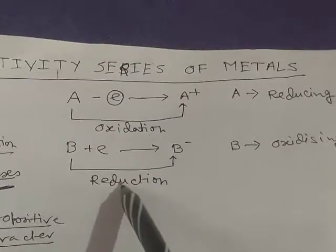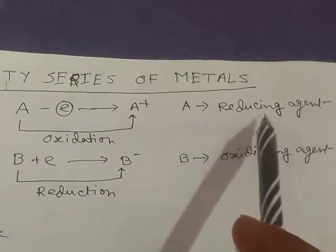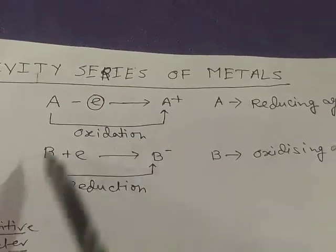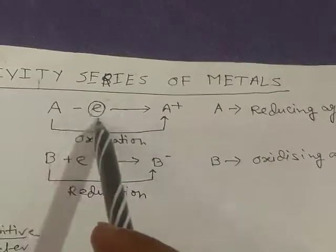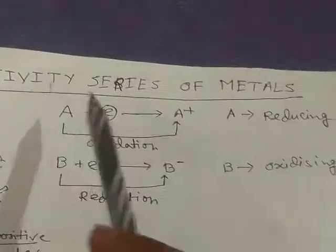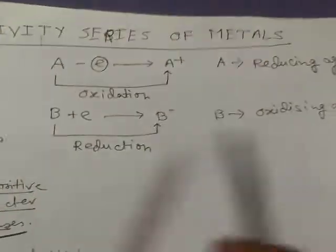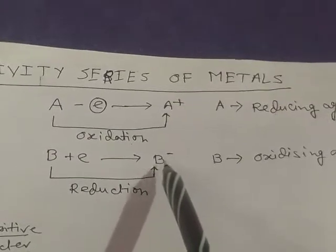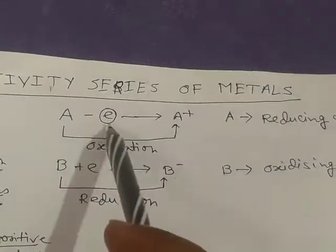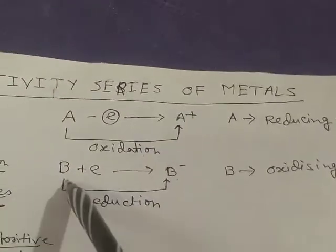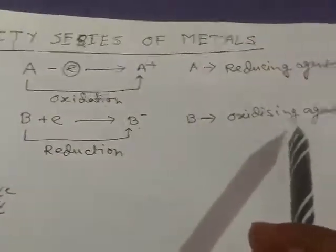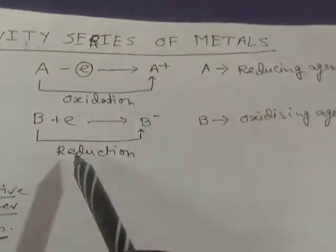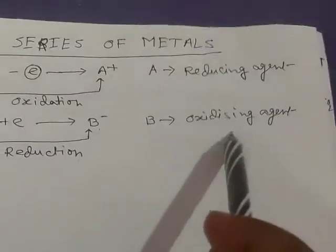Here A is called the reducing agent because by donating one electron it can reduce element B. On the other hand, B accepts the electron and gets reduced, while indirectly helping to remove the electron from A, meaning B helps to oxidize A. So B is the oxidizing agent. The element which itself gets oxidized is called the reducing agent, and the element which itself gets reduced is called the oxidizing agent.